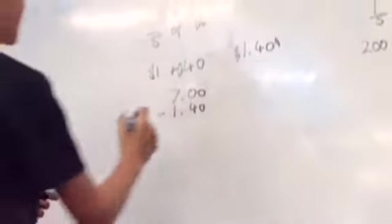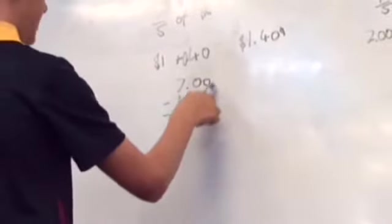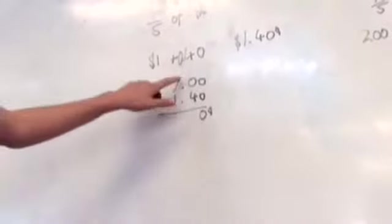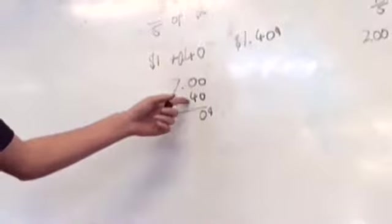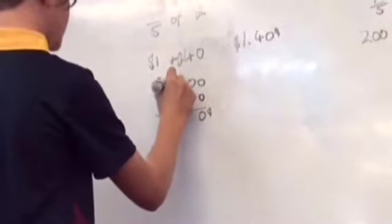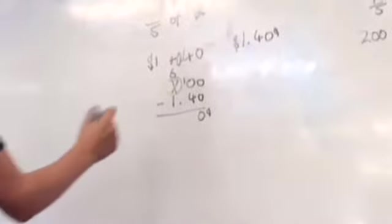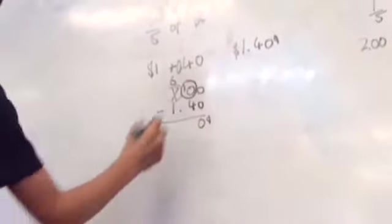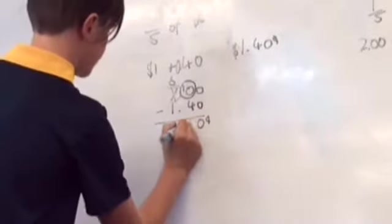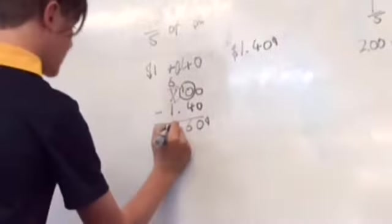Now, so we need to go 0 minus 0 because they're in the same place value column is 0. Now 0 minus 4, we can't do that because the smaller number is on top and the larger number is on the bottom. So we will borrow one from here. So this turns into a 6 because we've borrowed one and the extra one goes over there, which makes this number now 10. So now it's 10 minus 4, which is 6. You've got a decimal point.